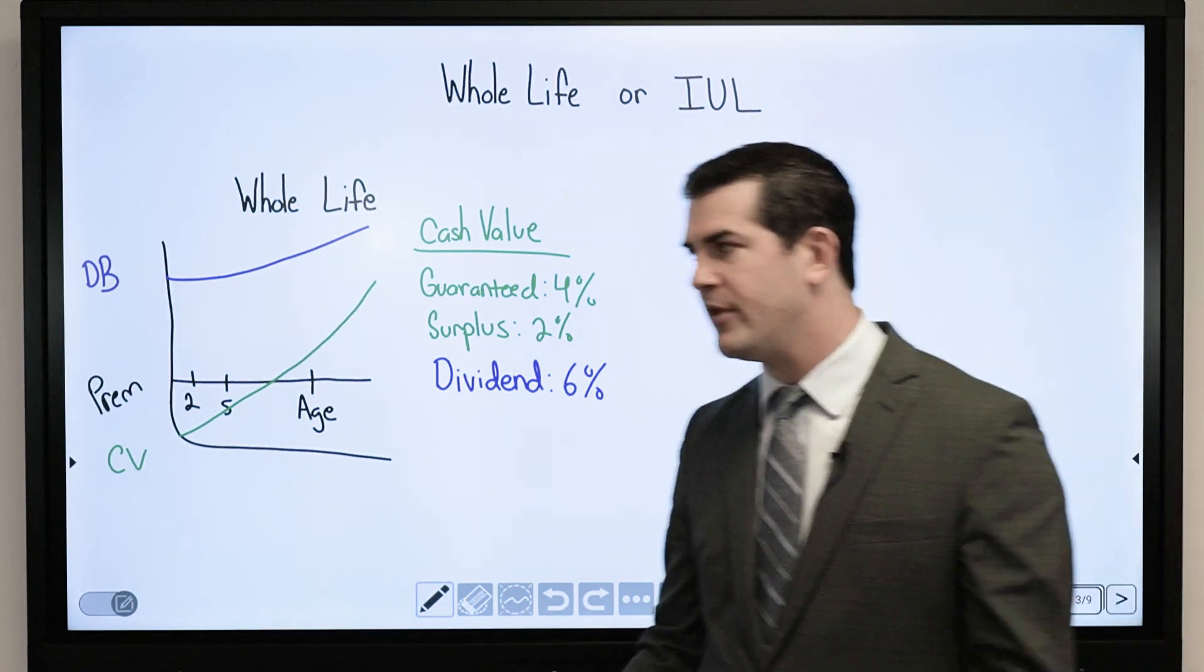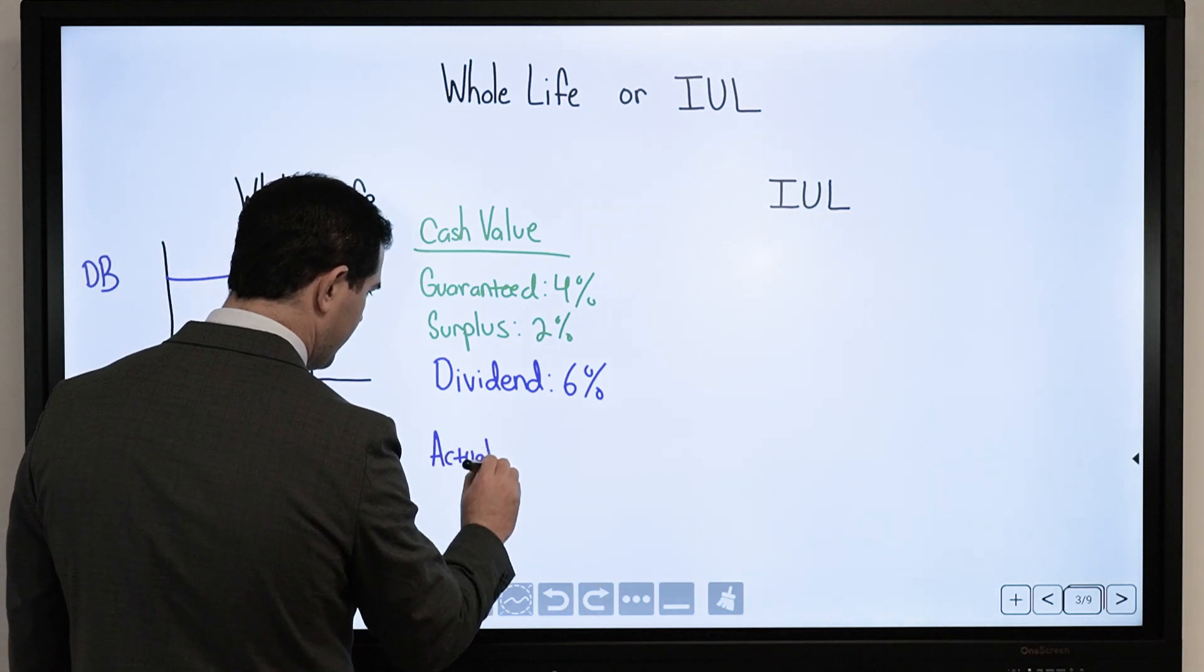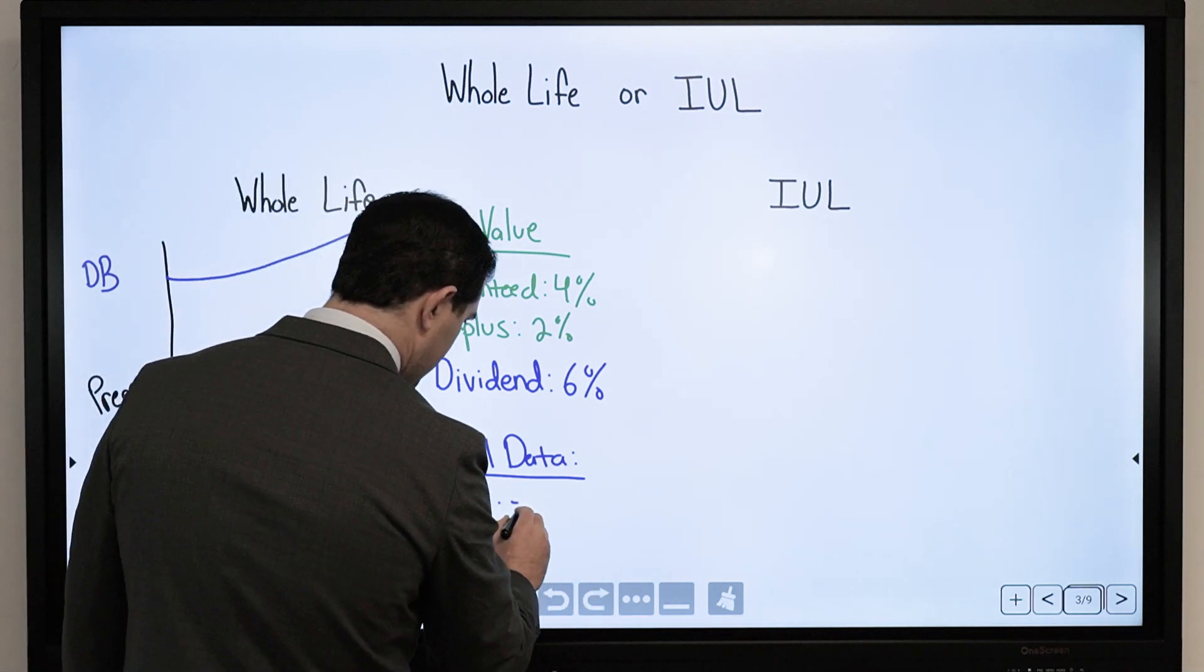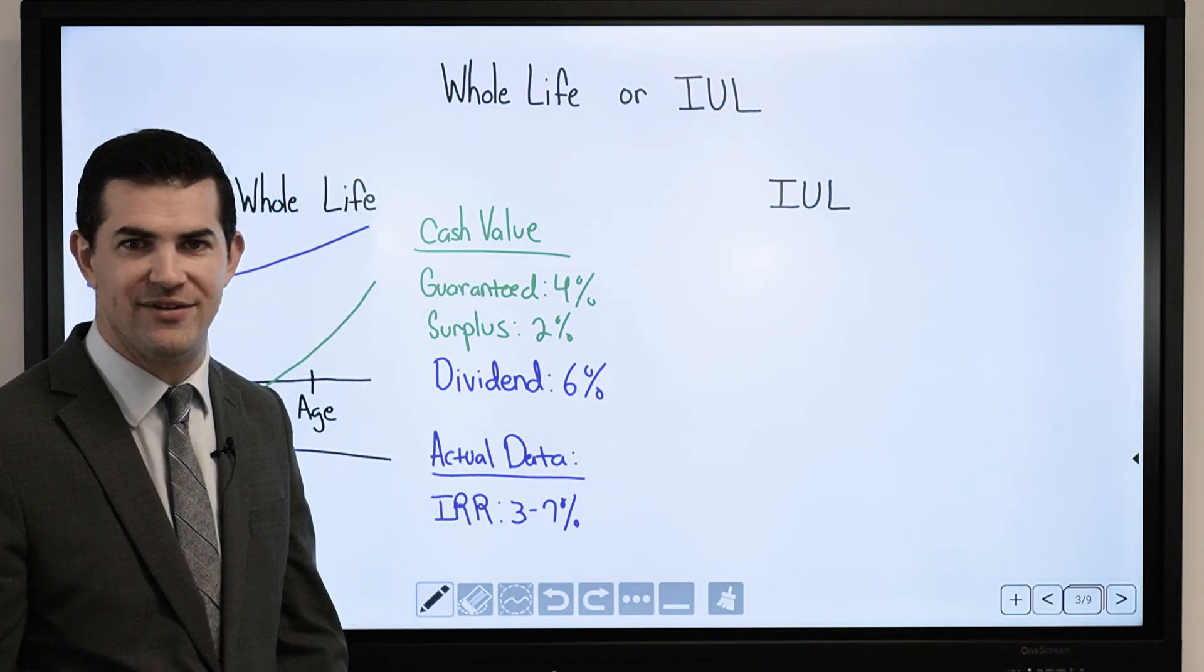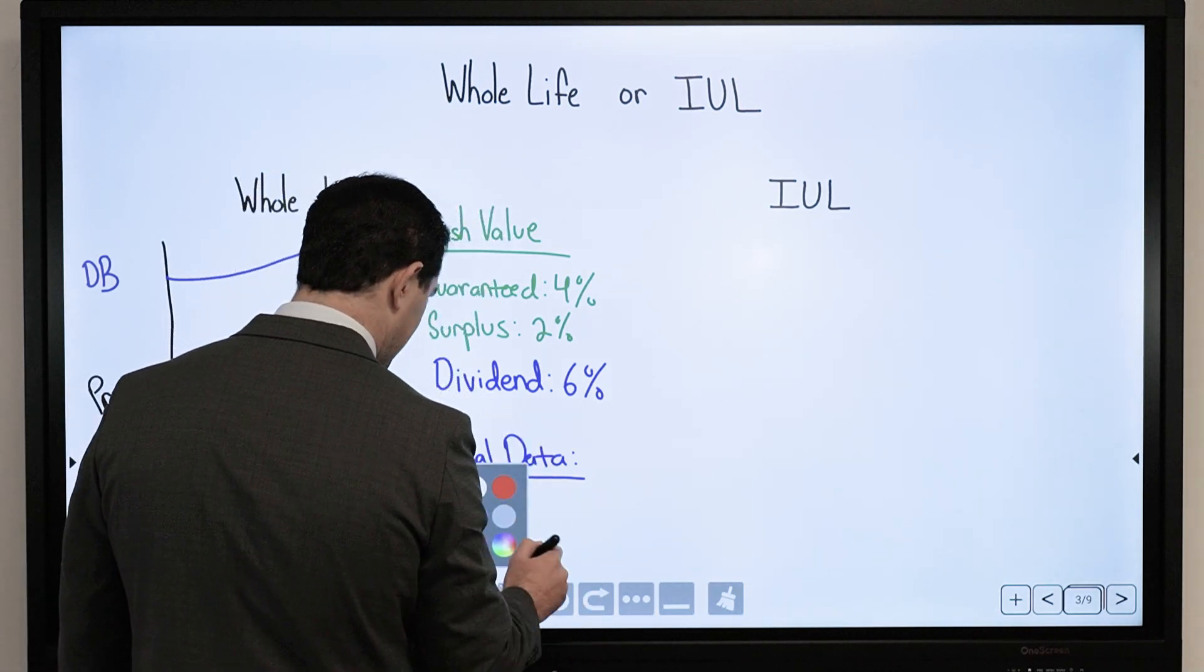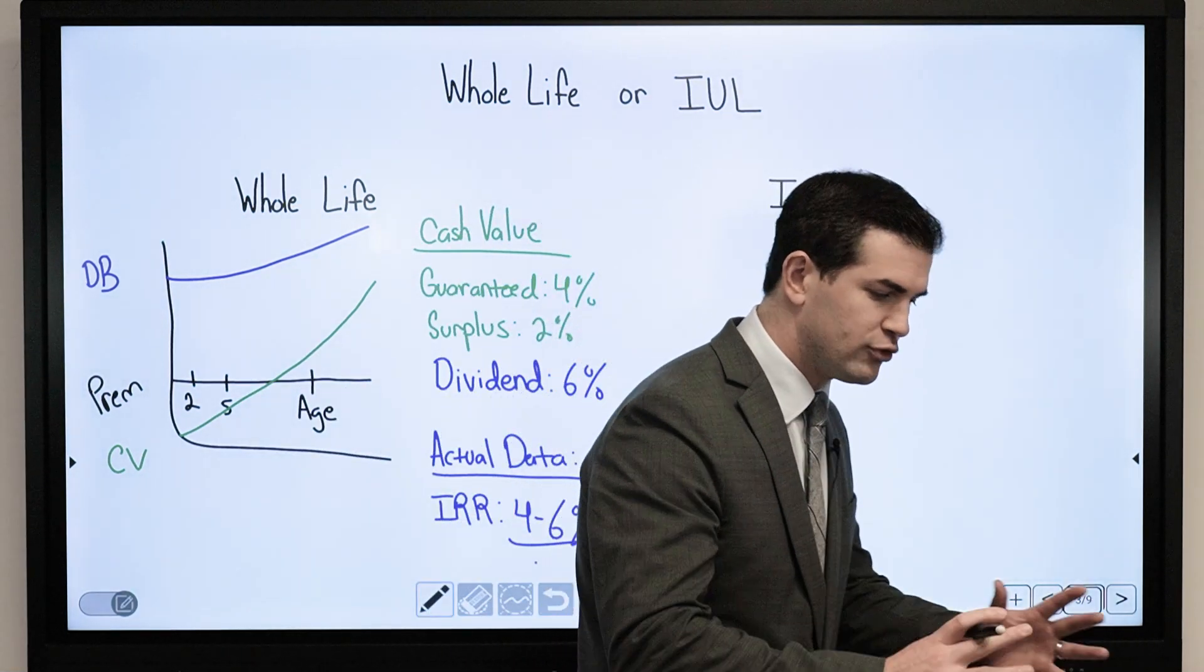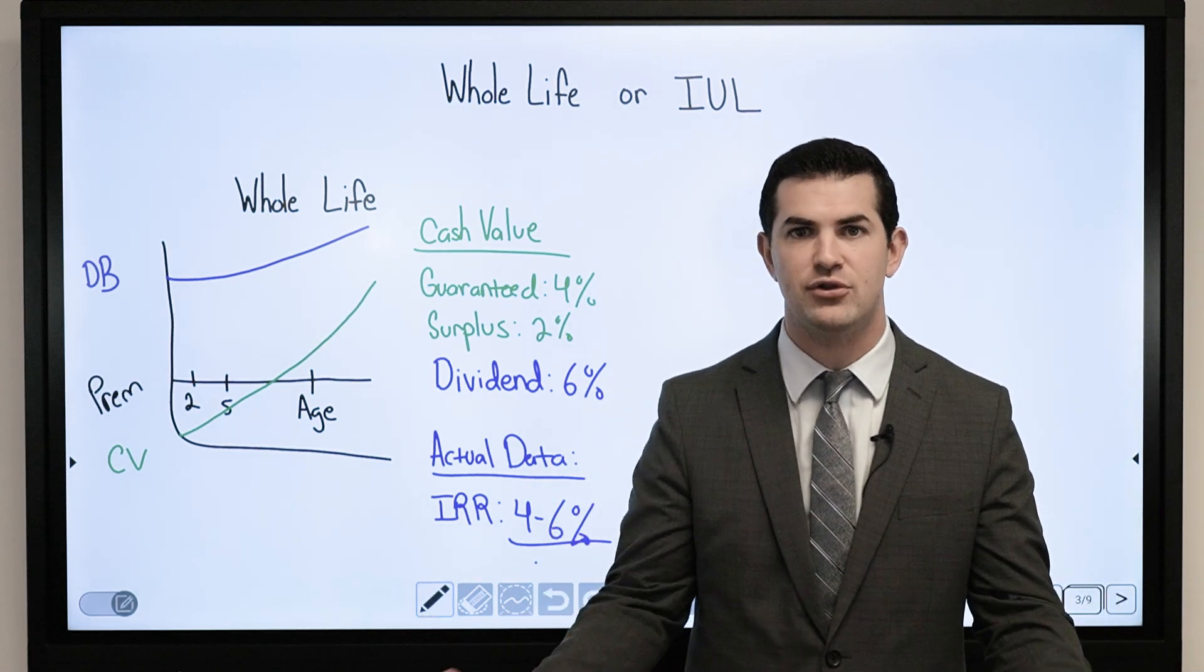From a historical standpoint, when we look at actual data, depending on the time frame, we've seen internal rates of return anywhere from 3% to 7%. That 7% was a policy issued in 1975, that's not going to happen again. Most well-designed policies are in the 4% to 6% range.